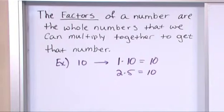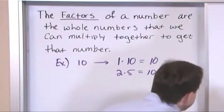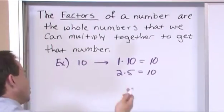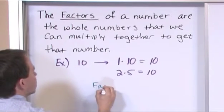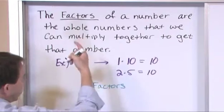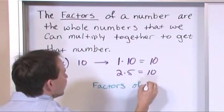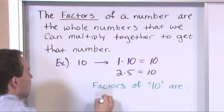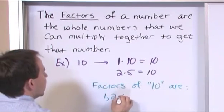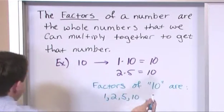And they can be multiplied together to give you 10. So what we've learned from this is the factors, which is the word we're trying to learn here, of the number 10 are 1, 2, 5, and 10. That's it.